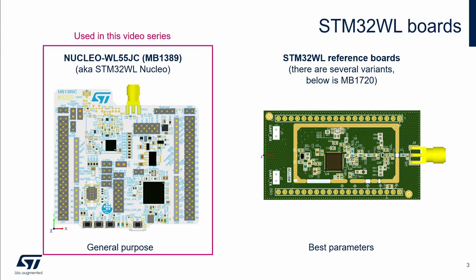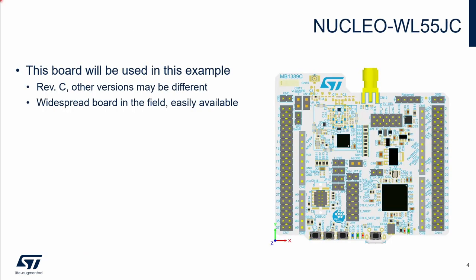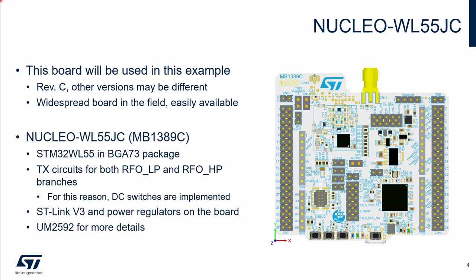The STM32WL Nucleo board is used in this video series — specifically Revision C; other revisions may be different. This board was chosen because it is widely spread in the field and is easily available. The Nucleo board contains the STM32WL55 in BGA73 package. Both transmitter branches — low power and high power — are implemented on the board, so DC switches are needed in the design. The board also has an embedded ST-Link version 3 and power regulators.